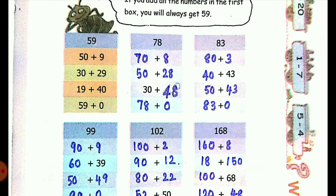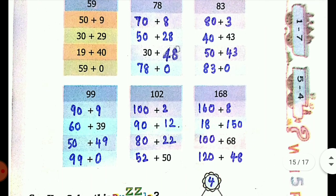You can just write the combinations and check. Here, 90 plus 9, 60 plus 39, 50 plus 49, 99 plus 0 for 99.